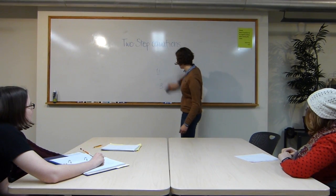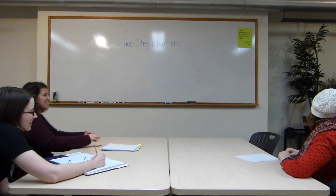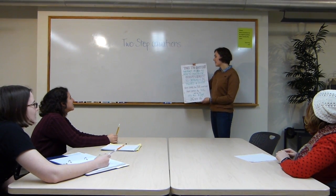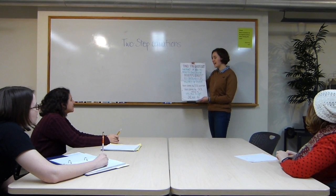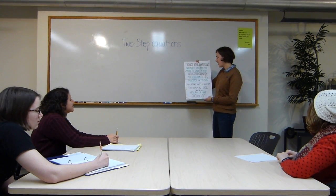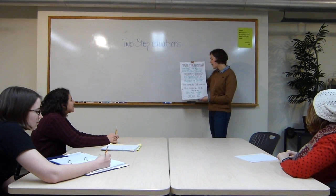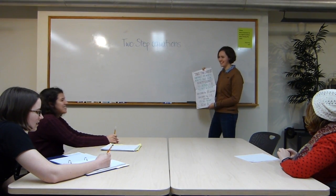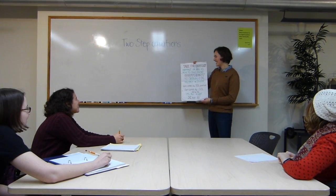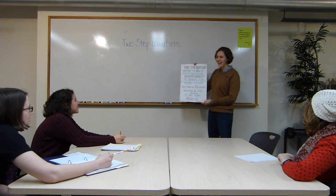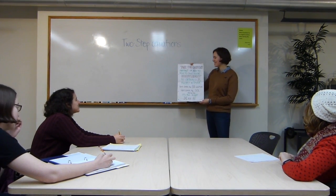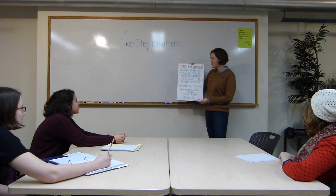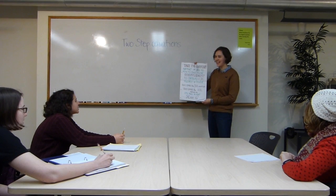And in case you are an auditory learner and musically inclined, I have a rhyme. It's to the tune of Here Comes the Sun by the Beatles. So I'll listen once and then we'll do it together. Take the constant, subtract or add, to move to one side. Coefficient to obtain one x, multiply or divide. Here comes the solution, here comes the sol and we say, it's alright. Here we go. One, two, three. Take the constant, subtract or add, to move to one side. Coefficient to obtain one x, multiply or divide. Here comes the solution, here comes the sol and we say, it's alright.